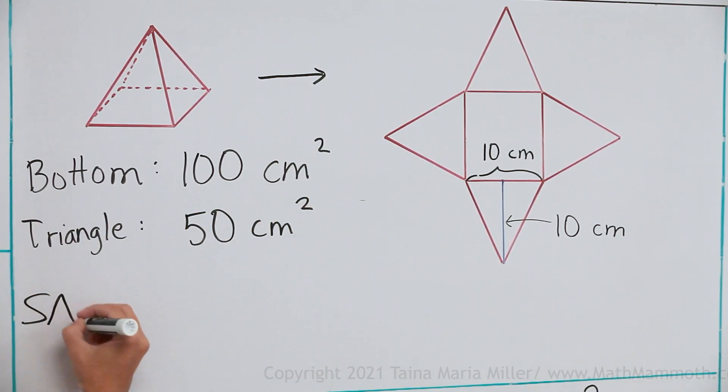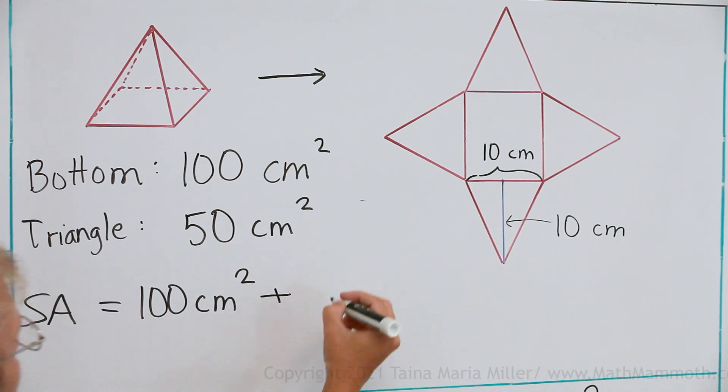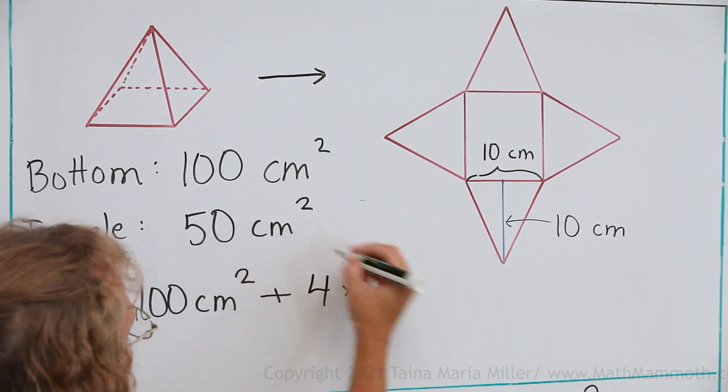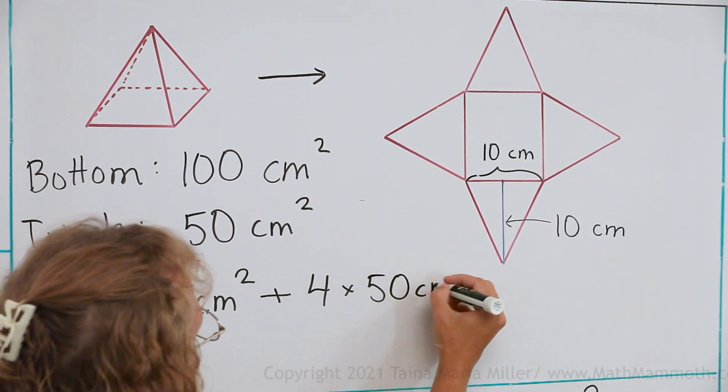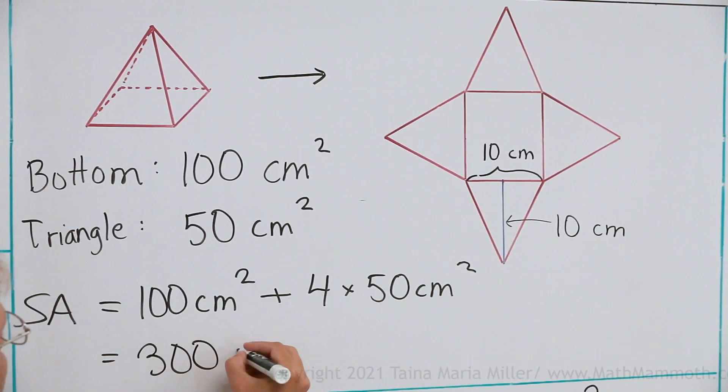And then the total surface area is that area of the bottom, and we add 4 times the area of one triangle. So here's 200 and 100 makes a total of 300 square cm.